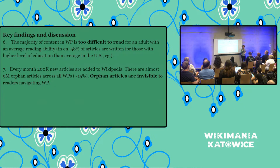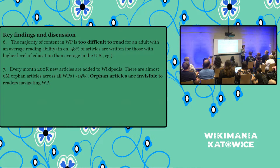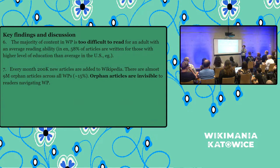Every month, roughly 200,000 new articles get created on Wikipedia across all languages. And there are almost 9 million articles currently that are orphans — around 15% of the content — articles that are not connected and don't have incoming links from other articles. The very sad part is that these orphan articles are effectively invisible to the millions of readers who are trying to use Wikipedia's hyperlinks or navigation to get to these articles.